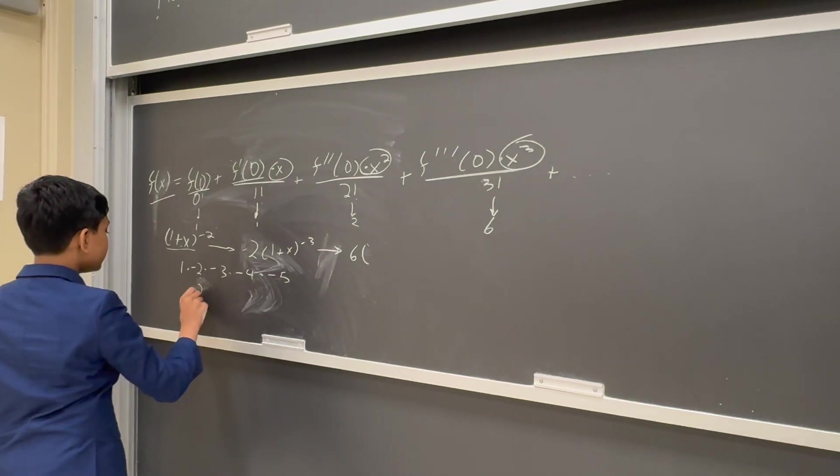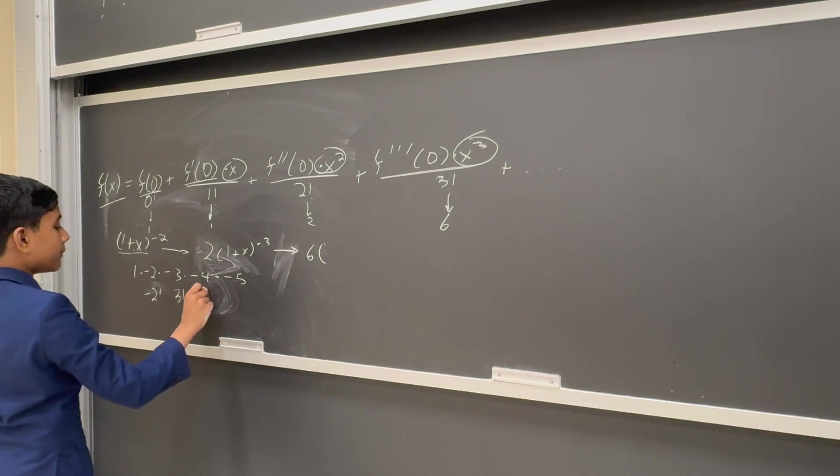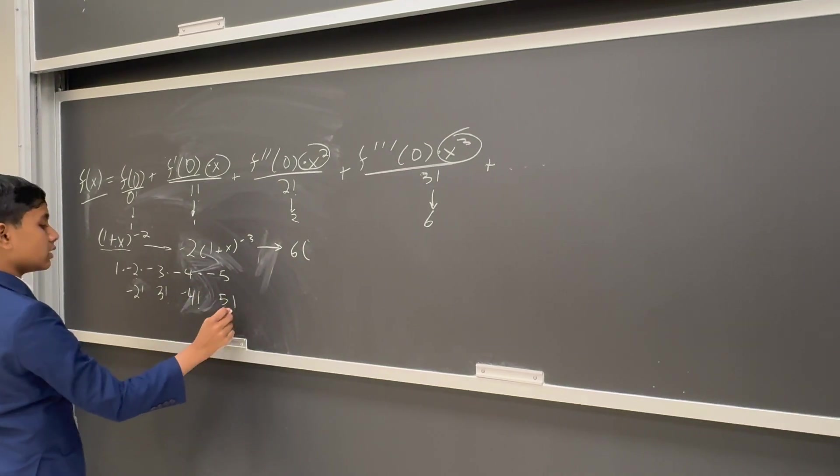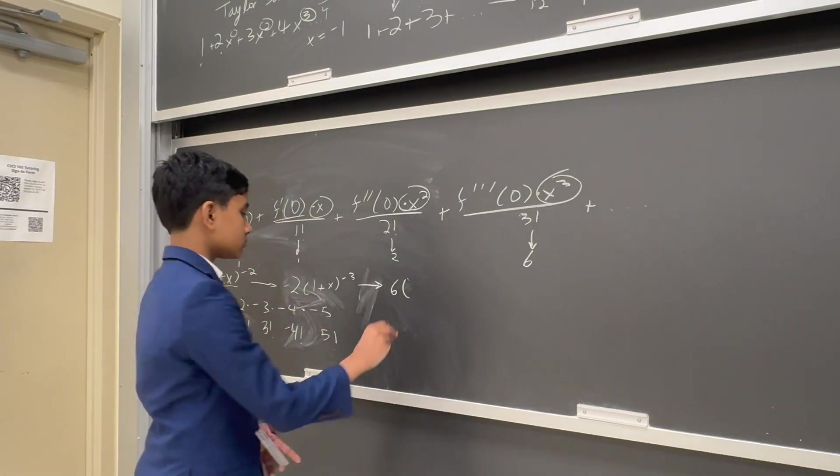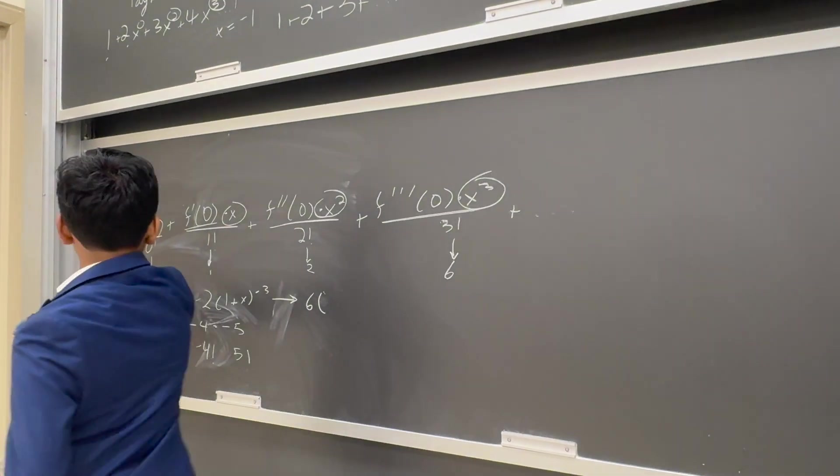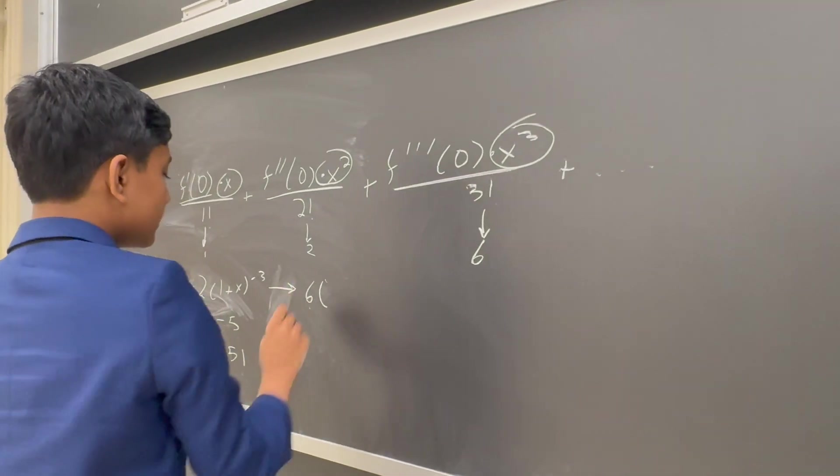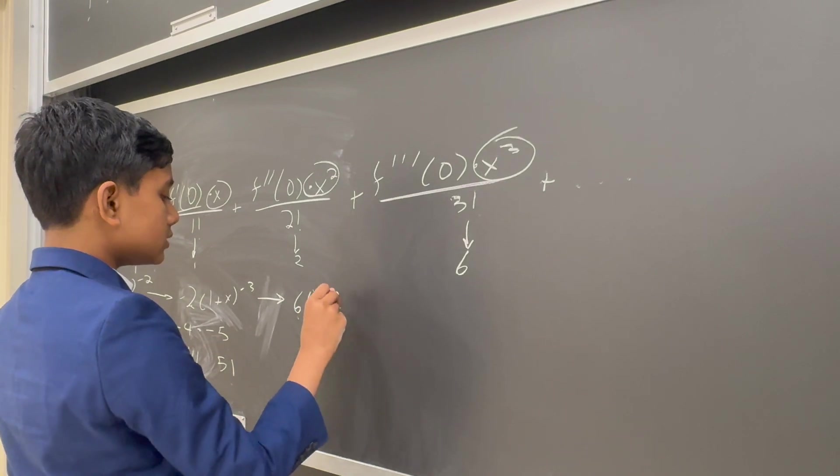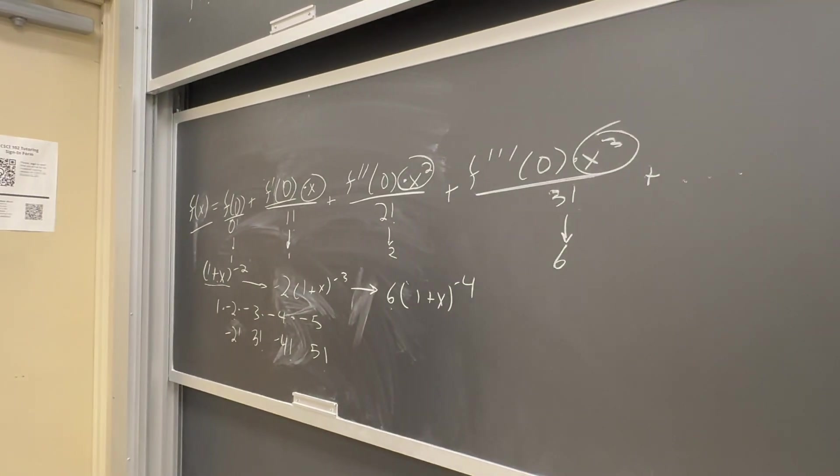So this is going to become the factorial sequence. Admittedly, it gives you minus 2 factorial, then 3 factorial, minus 4 factorial, plus 5 factorial, etc. So it should be apparent from here: this is 1 factorial, this is minus 2 factorial, this is 3 factorial, and so on and so forth.